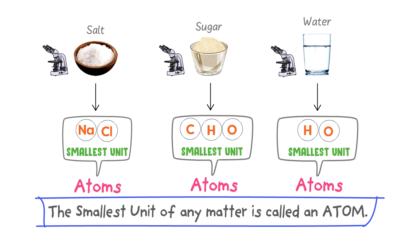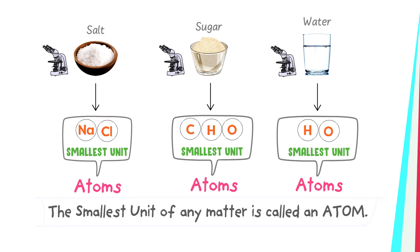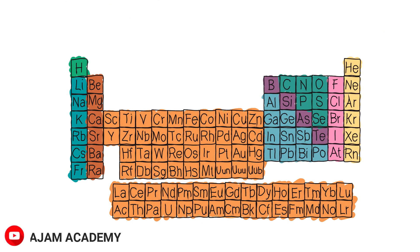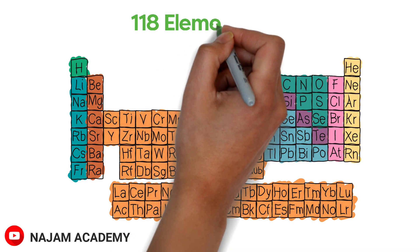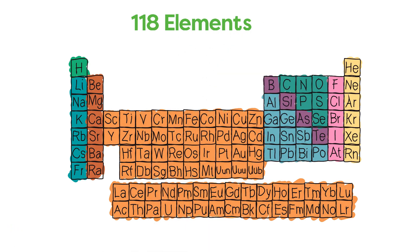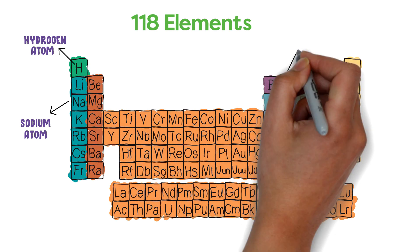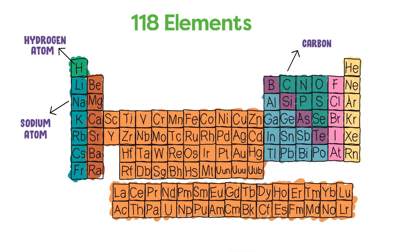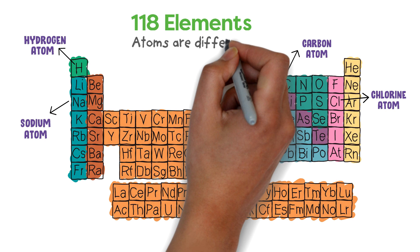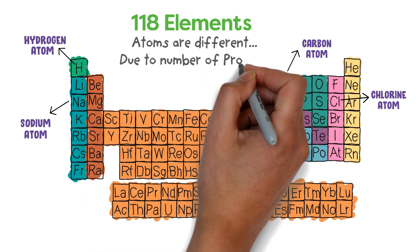We cannot divide an atom further into something else. Consider the periodic table — there are 118 elements. The smallest unit of hydrogen is the hydrogen atom, the smallest unit of sodium is the sodium atom, the smallest unit of carbon is the carbon atom, and the smallest unit of chlorine is the chlorine atom.